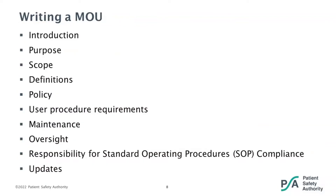When it comes to developing and writing a memorandum of understanding, the sections include: introduction, purpose, scope, definitions, policy, user procedure requirements, maintenance, oversight, responsibility for standard operating procedure compliance, and updates. We're going to briefly go through each of those sections.